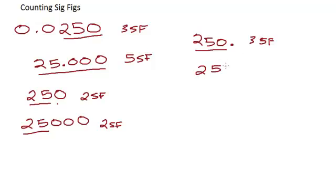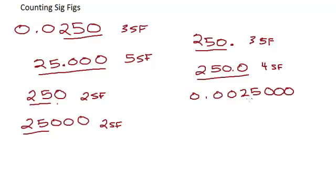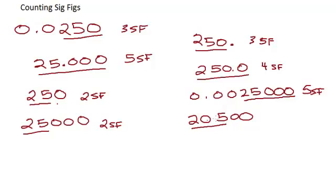If I write 250.0, now I have four sig figs. If I have the number 0.0025000, the zeros at the end are significant because there's a decimal place — there are five sig figs in this number. But zeros at the end without a decimal place are not significant. For example, 20,500 — the 2, 0, and 5 at the beginning are significant, but the trailing zeros are placeholders. There are only three sig figs in 20,500.